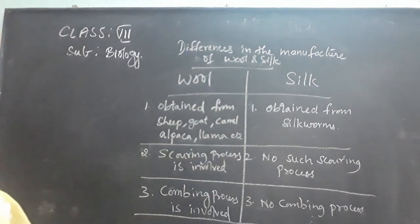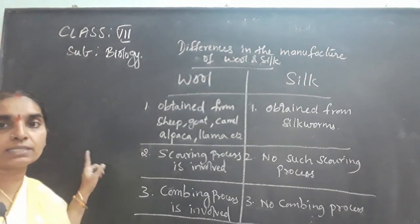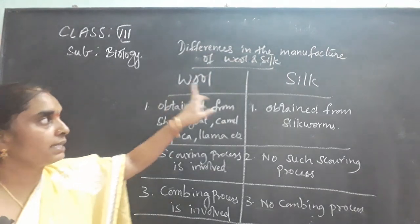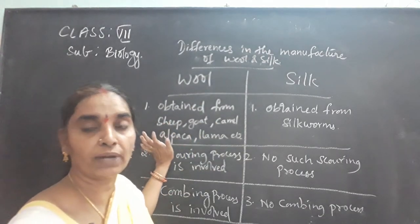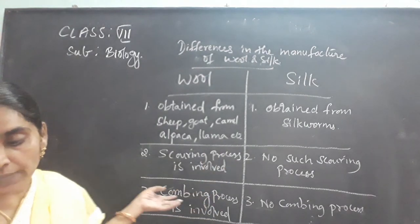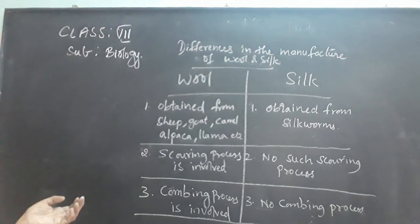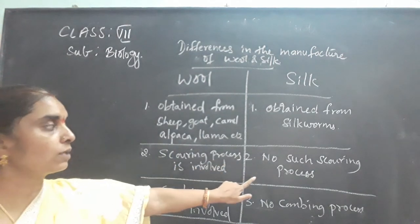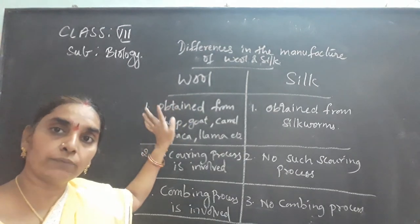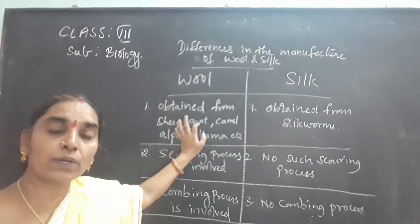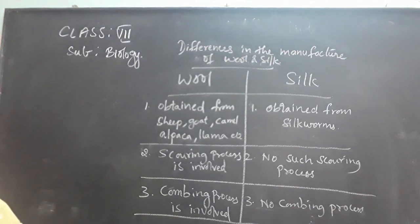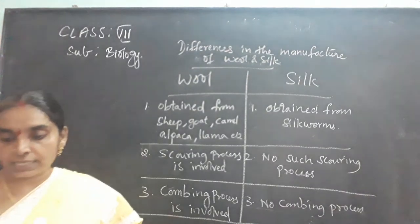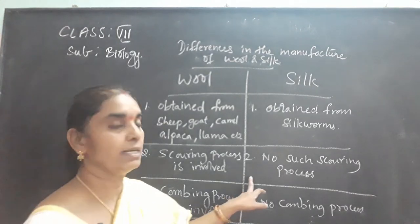The fourth point: in wool, the knitting process is involved — it is knitted using knitting needles. In silk, only the weaving process is involved, not knitting. Silk fibers are woven on looms only, whereas in wool both weaving and knitting processes are done. Woolen fibers are used to make sweaters, mufflers, shawls, and so on, whereas silk is used to produce other products such as crepe and satin.